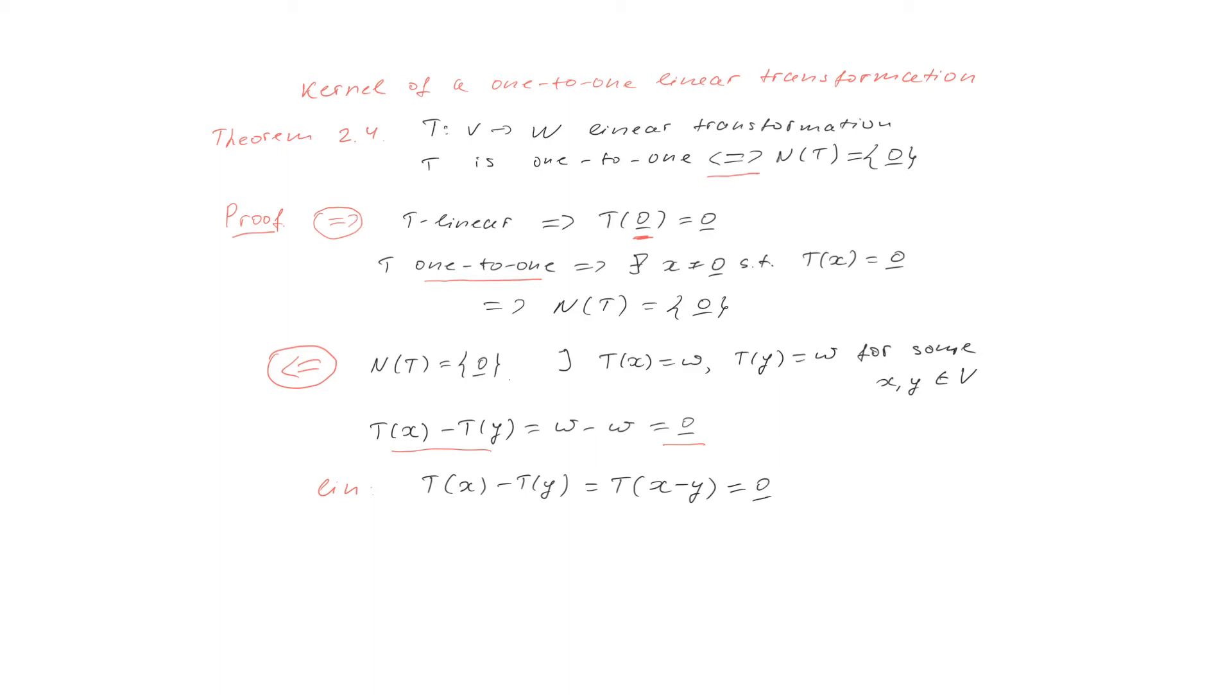Now we can notice that x minus y is a vector of which transformation is equal to zero vector. What does it mean? It means that x minus y is in the kernel. However, kernel consists only of one vector which is the zero vector.